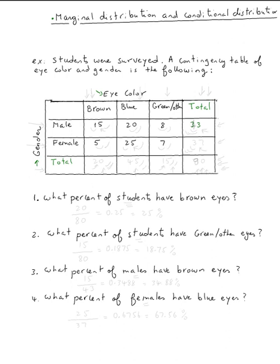For the females: 5 plus 25 is 30, and 30 plus 7 is 37. If we add those together we get a total. Now looking at the columns: for brown, 15 plus 5 gives you 20. For blue, 20 plus 25 gives you 45. And for green or other, 8 plus 7 gives you 15.